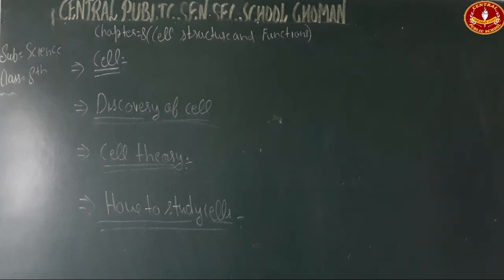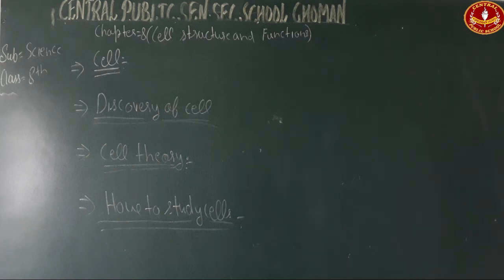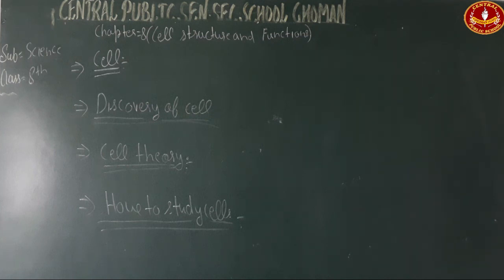After discovery, we learned that the microscope was invented to help us see cells because they are very small. Then we studied cell theory: all living organisms are made of cells — this has two points: cells are the structural and functional unit of the body, and new cells arise by division of pre-existing cells. Chapter 8 covers the discovery of cells, the cell theory, how to study cells, and variation in the number of cells in organisms. We will study different types of organisms in the next chapter.